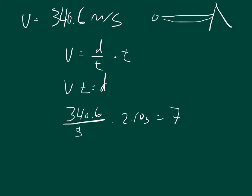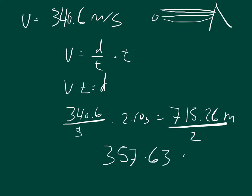Now the distance, the total round trip was 715.26 meters. And so that's round trip, that's from here to here and then back. And so we want to divide that by 2 to get the distance one way. And so the distance to the mountain is 357.63 meters.